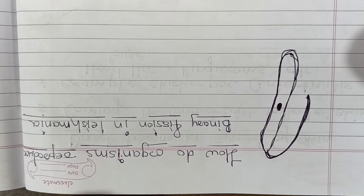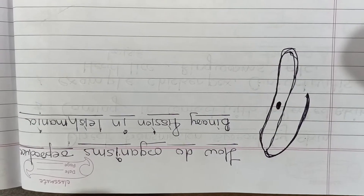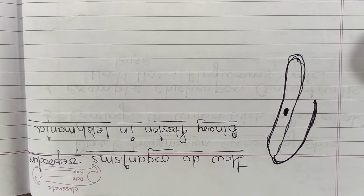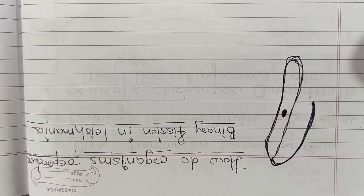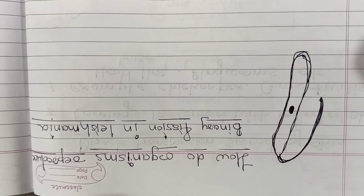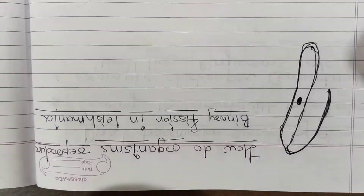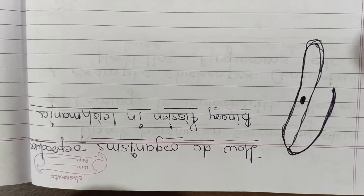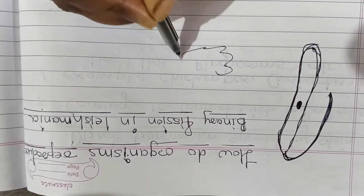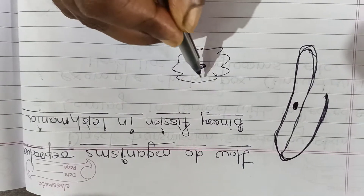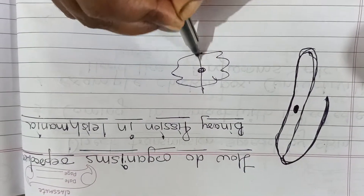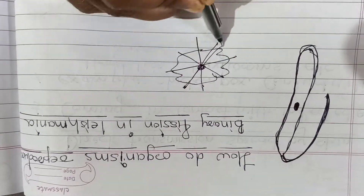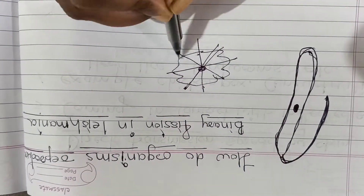As we know, amoeba has very less body differentiation, so in any orientation it can be divided. Because body organization is very very less — it is not organized. Suppose this is amoeba; it can start dividing from here, from here, from here — in any orientation it can start to divide.